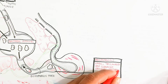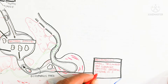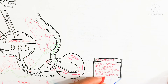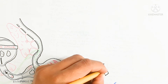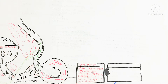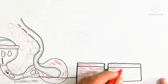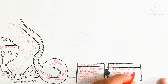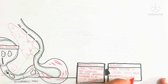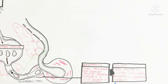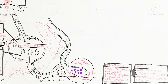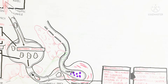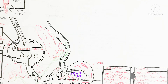The proventriculus is a small, thick-walled, glandular structure that appears externally as a slight dilation of the esophagus. Its function is critical: hydrochloric acid is produced, and pepsinogen is converted in the presence of hydrochloric acid into pepsin. Pepsin is used for protein digestion. The parietal cells and chief cells, similar to those in humans, produce hydrochloric acid and pepsinogen from the epithelial cells.